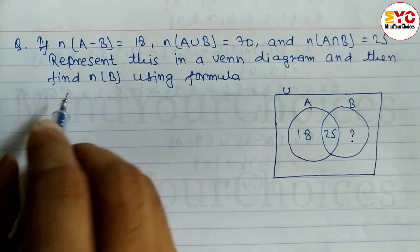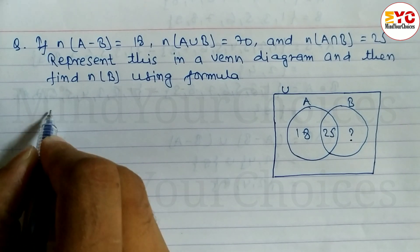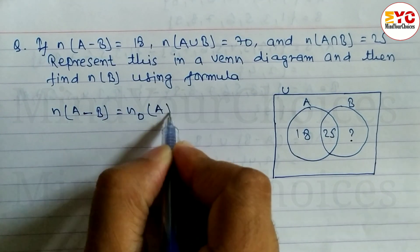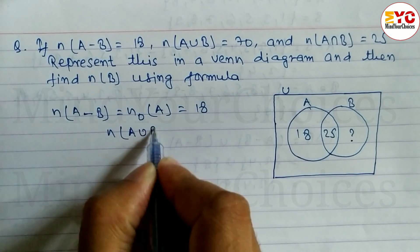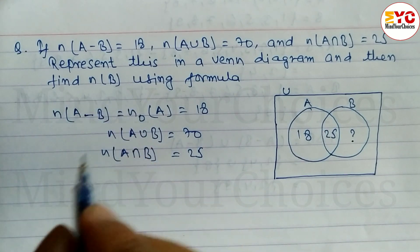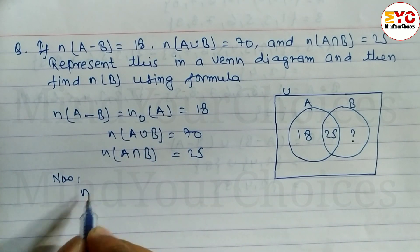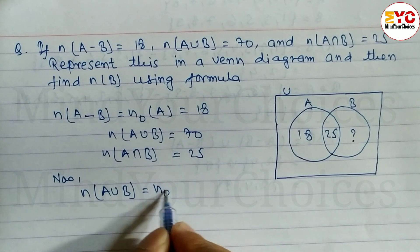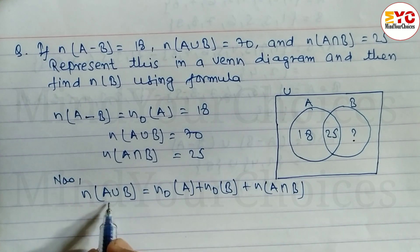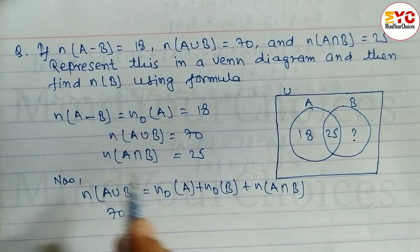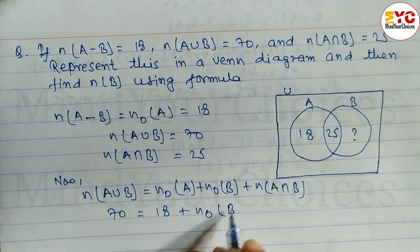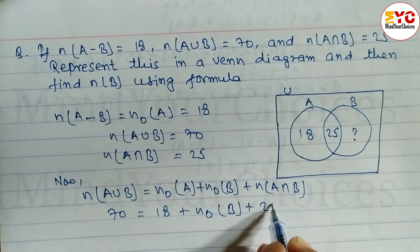Now we use the formula to find the value of n(B). We know that n(A minus B), or only A, equals 18; n(A union B) equals 70; and n(A intersection B) equals 25. The formula is: n(A union B) equals n(only A) plus n(only B) plus n(A intersection B). So 70 equals 18 plus n(only B) plus 25.